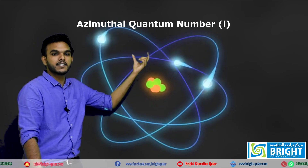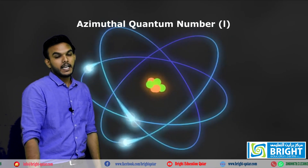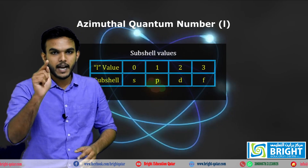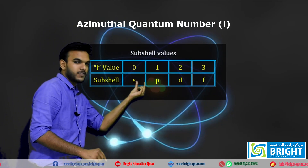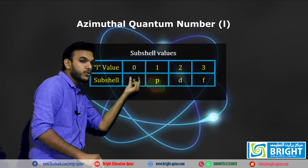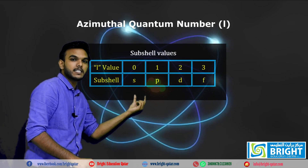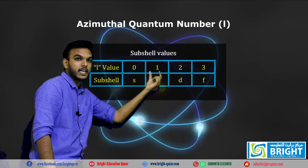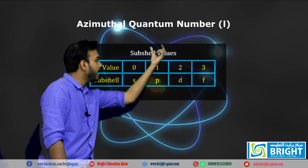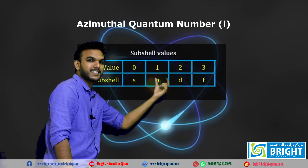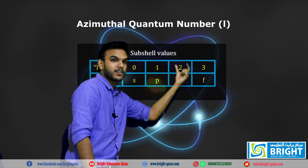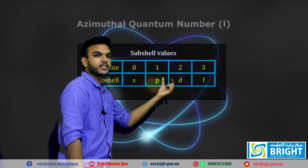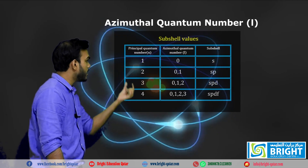The second is the azimuthal quantum number, represented by l. It represents the subshell values. If l is equal to 0, the subshell is s. If l is equal to 1, the subshell is p. If l is equal to 2, the subshell is d. And if l is equal to 3, the subshell is f. These are the four major subshells.